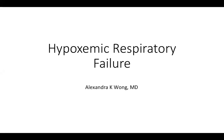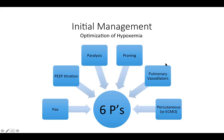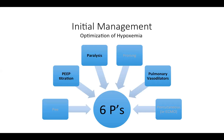Everybody is often familiar with this mnemonic of the six P's of refractory hypoxemic respiratory failure — approaches you can take to optimize your patient. It's a helpful framework to remember various approaches, including fluid management, PEEP titration, paralysis, proning, pulmonary vasodilators, and percutaneous options or ECMO. Today we're just going to talk about PEEP titration, paralysis, and pulmonary vasodilators, as there are separate lectures on fluid management, proning, and ECMO.